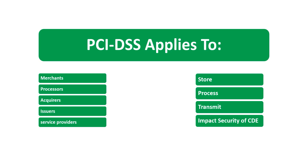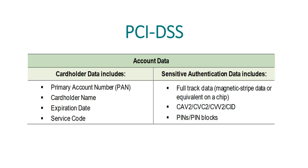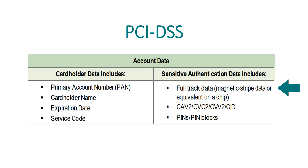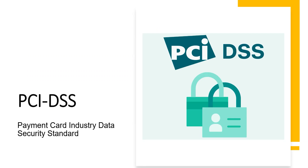Let's review some key terms to make sure we're all on the same page. Account data comprises cardholder data and sensitive authentication data. Cardholder data may include the PAN (primary account number), cardholder name, expiration date, and service code. On the other hand, sensitive authentication data, or SAD, may include full track data (magnetic stripe data or equivalent on a chip), CVV codes/values, PIN blocks, and PINs.